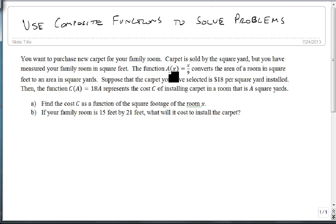The function a of x equals x over 9 converts the area of a room in square feet to an area in square yards. Suppose that the carpet you have selected is $18 per square yard installed. Then the function c of a equals 18a represents the cost c of installing carpet in a room that is a square yards.